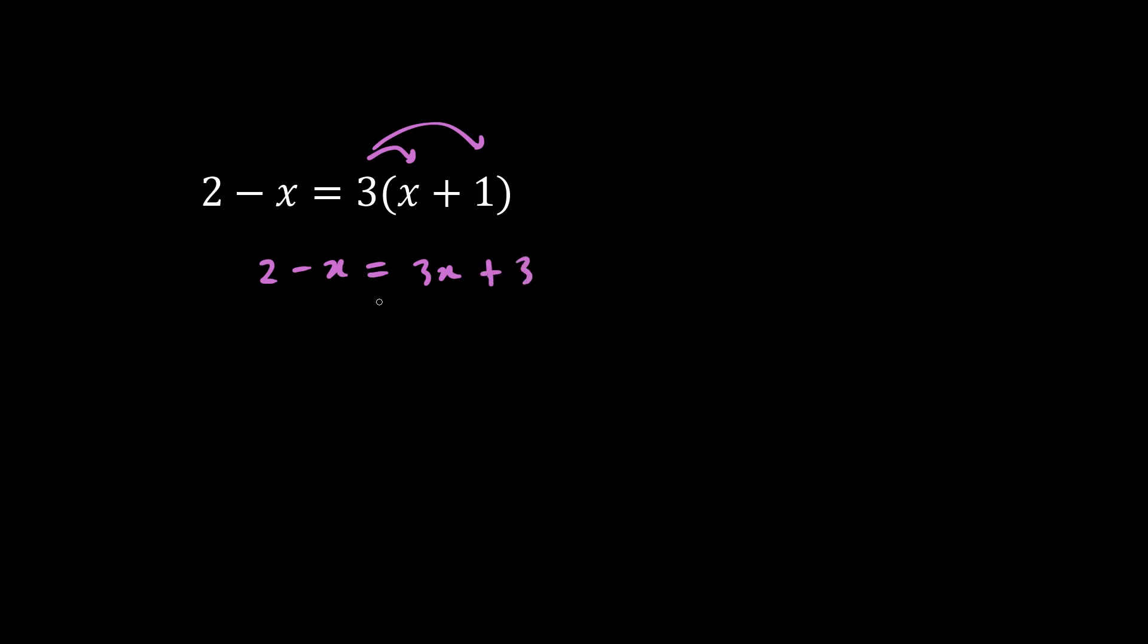Let's gather our x's towards the right. We have 3x plus x. And this positive 3, when we move to the left, becomes minus 3.